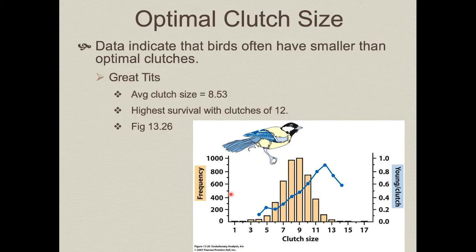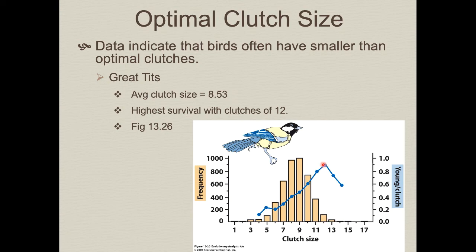But when you collect actual field data on bird species and look at their clutch sizes, you see something different. In a study on great tits — European birds similar to North American chickadees — they show a range of clutch sizes. Most individuals in the population lay between eight and nine eggs. If you look at the number of young produced per clutch, the apparent optimum seems to be around twelve. So why aren't they laying more? It seems like directional selection should push clutch size to the right, since larger clutches produce more offspring.